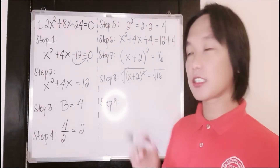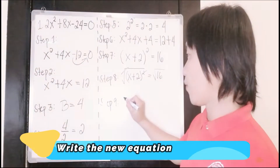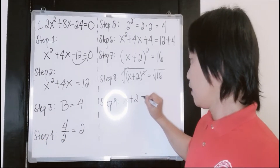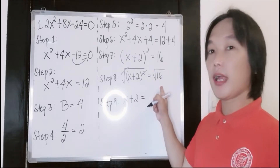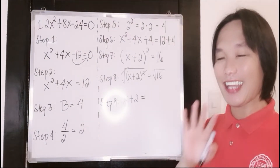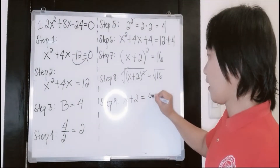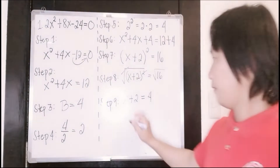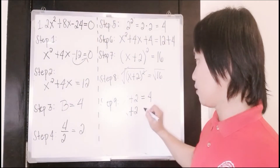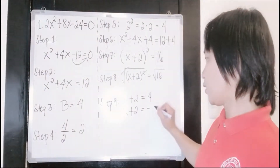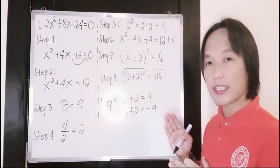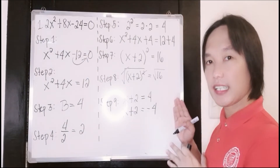Next, write our new equation. That will be x plus 2. Remember, a square root of a number is both a positive and a negative number. So we will have positive 4. And we will write again x plus 2, which will also be equal to negative 4. So this is now our step number 9.